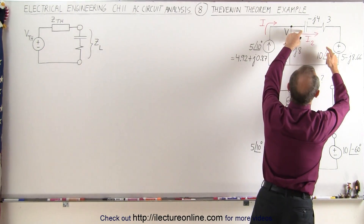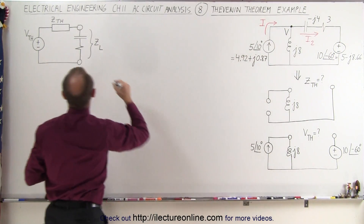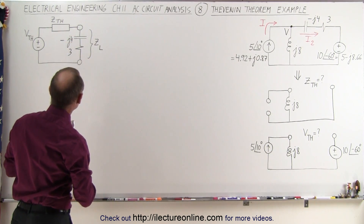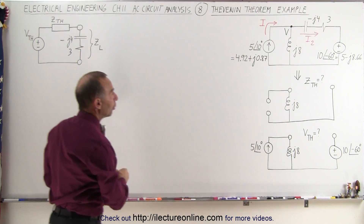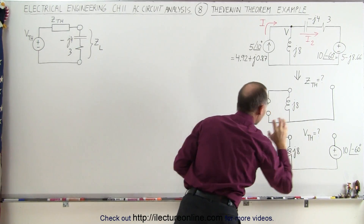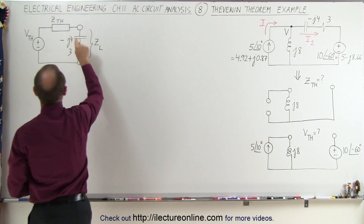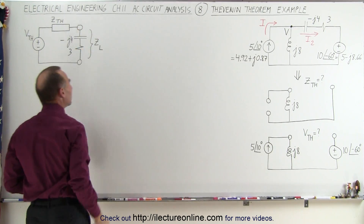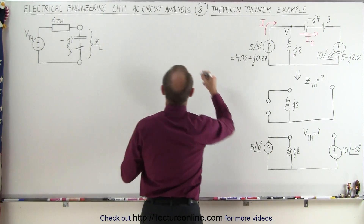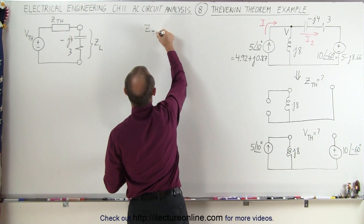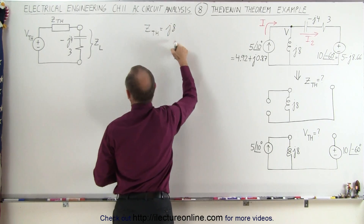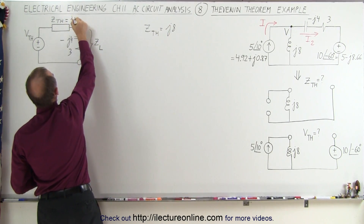In this case, the load impedance is a capacitor with minus J4 and a resistor with positive 3. We pull the Thevenin impedance out of this circuit and put it in the equivalent. Starting with finding Z_Thevenin — that's fairly straightforward. Z_Thevenin is simply equal to the impedance between the two terminals, which is equal to J8.